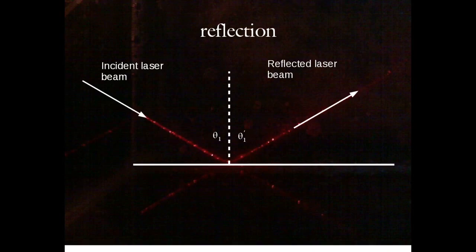The law of reflection can be stated very simply: if a beam of light enters and strikes a surface, and we draw a normal to the surface at the point where the light strikes, and we denote the angle with respect to that normal as theta 1 for the incident ray, then theta 1 prime — the angle of reflection — will be equal to theta 1.